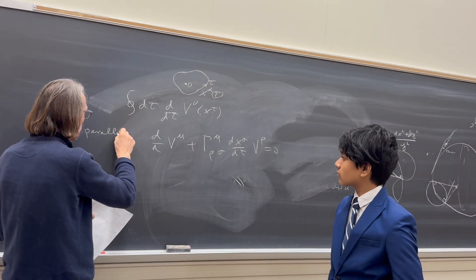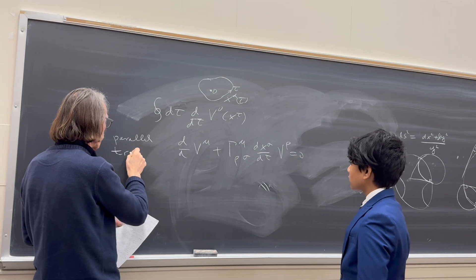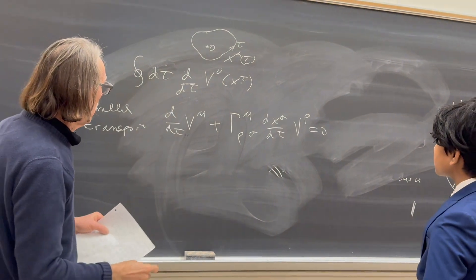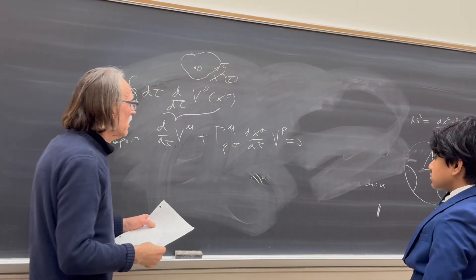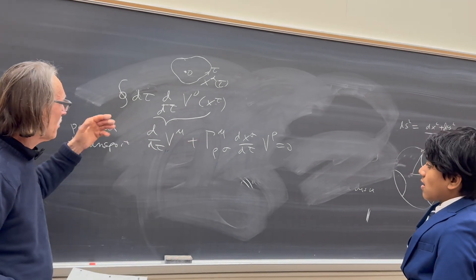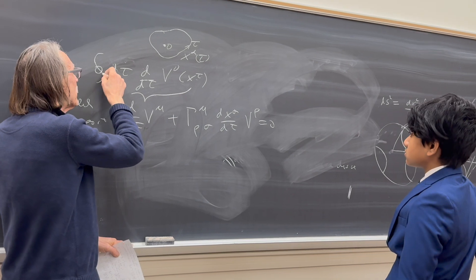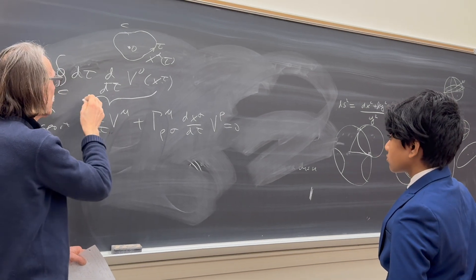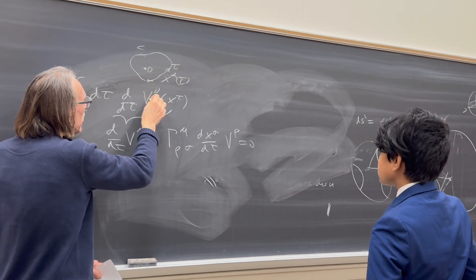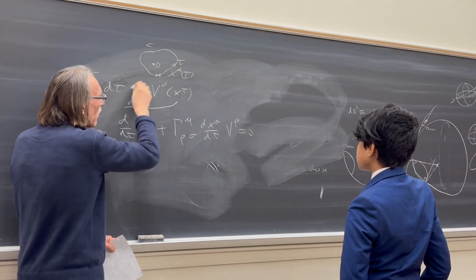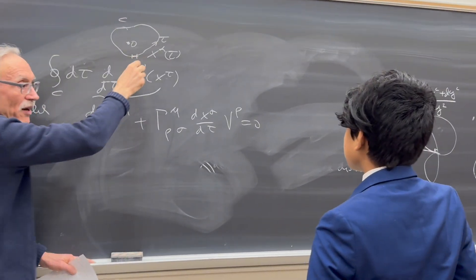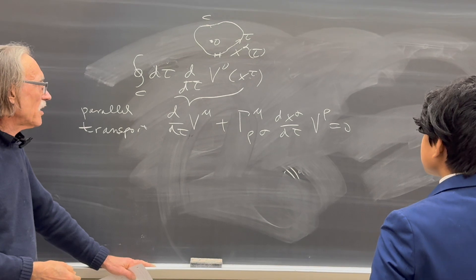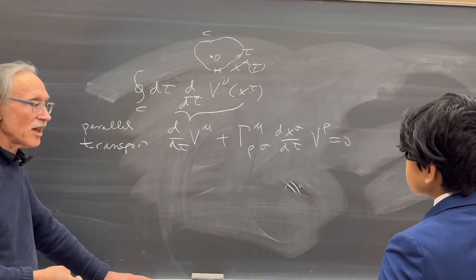With parallel transport, we know that d/d tau v nu plus gamma mu rho sigma times dx sigma/d tau times v rho is equal to zero. This is the parallel transport equation. This derivative is taken with respect to tau. And this is put in here — that is the integral which we want to do. We do this integral over this closed contour. It is really a Riemann integral — we calculate over small distance, calculate this derivative, and add up everything. We go around once. And then the goal is to show that this is actually non-vanishing.